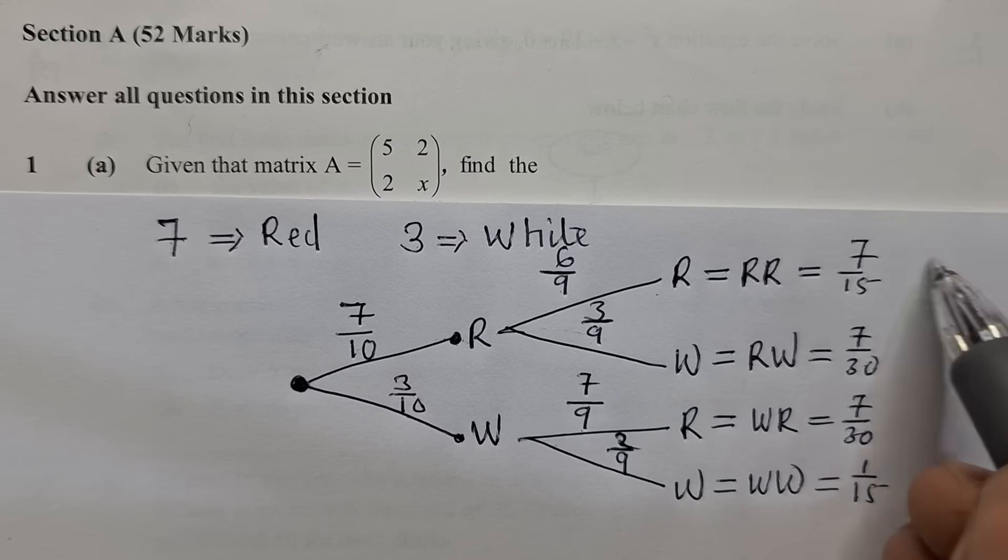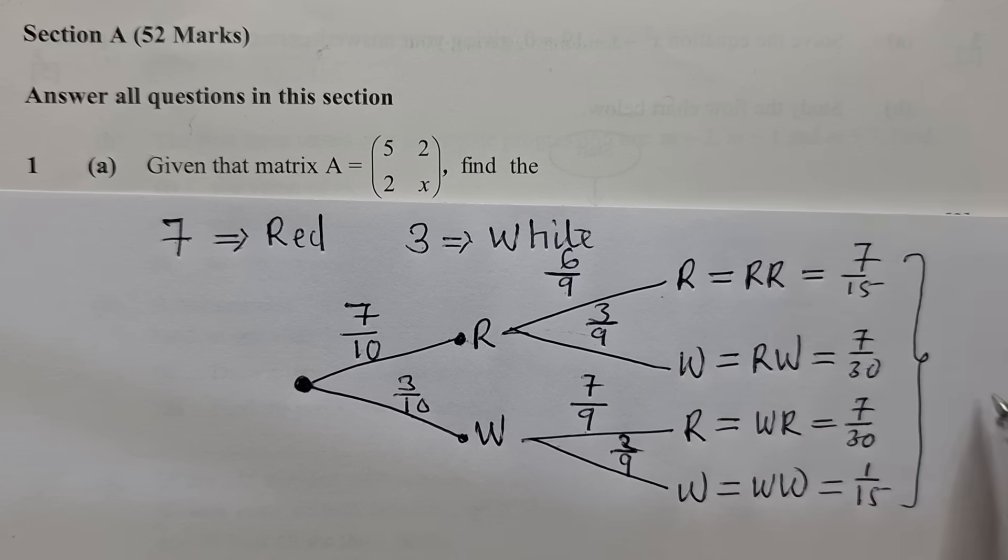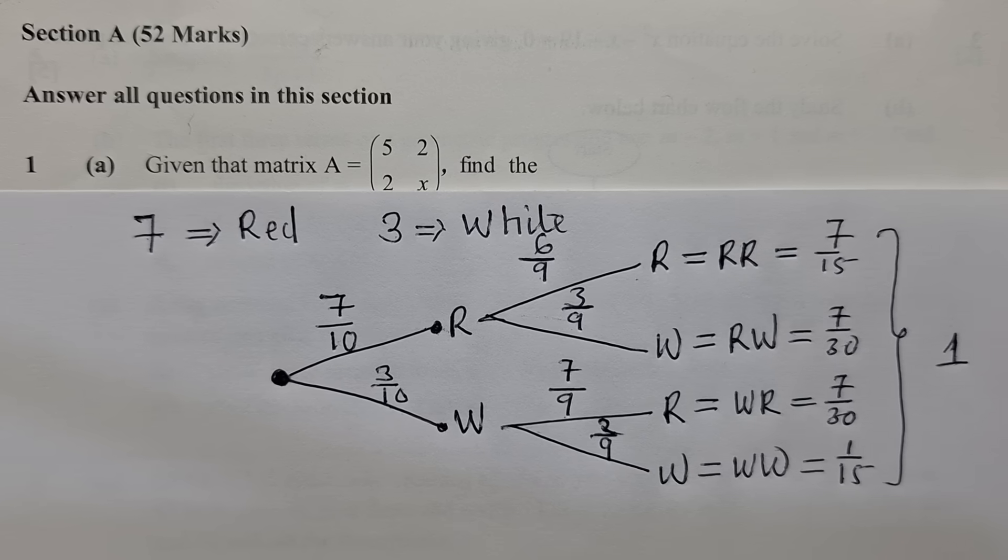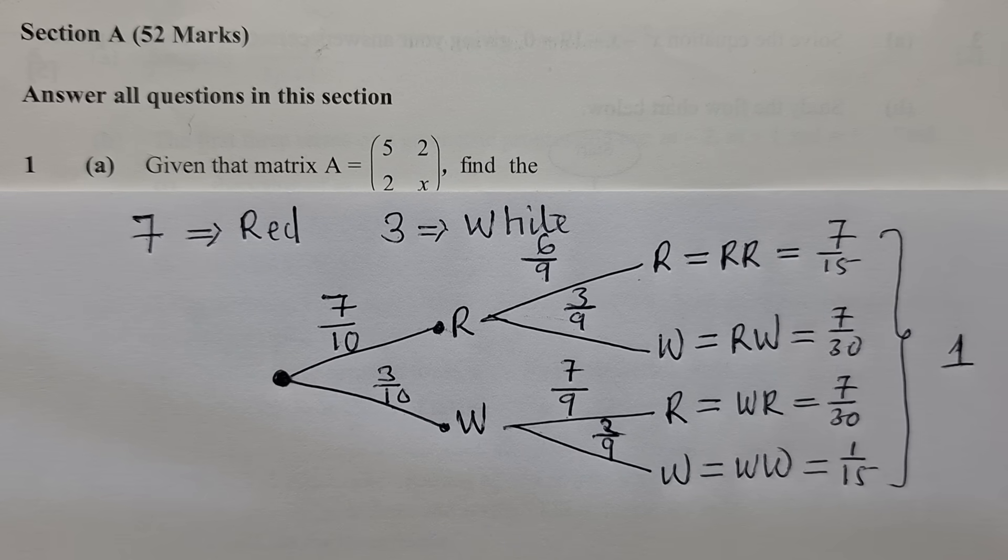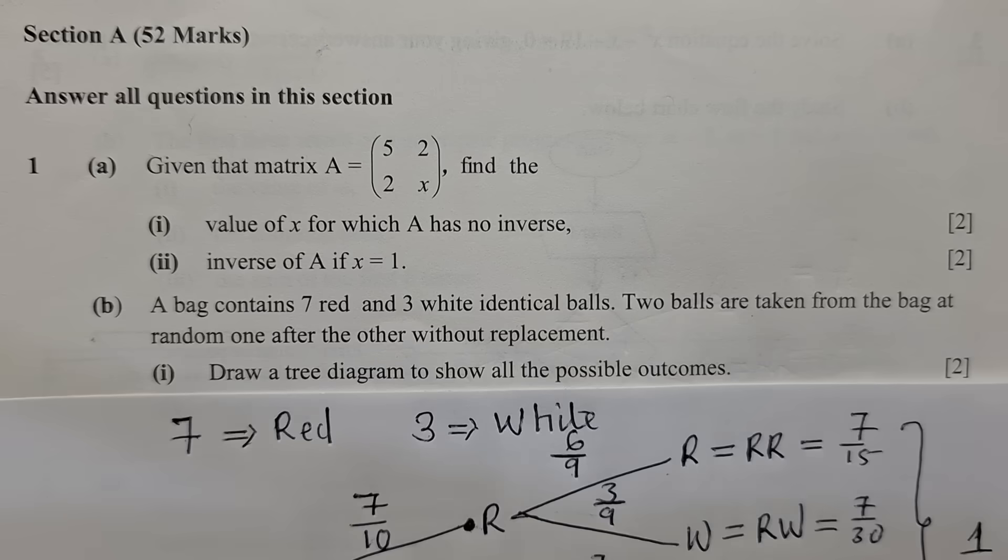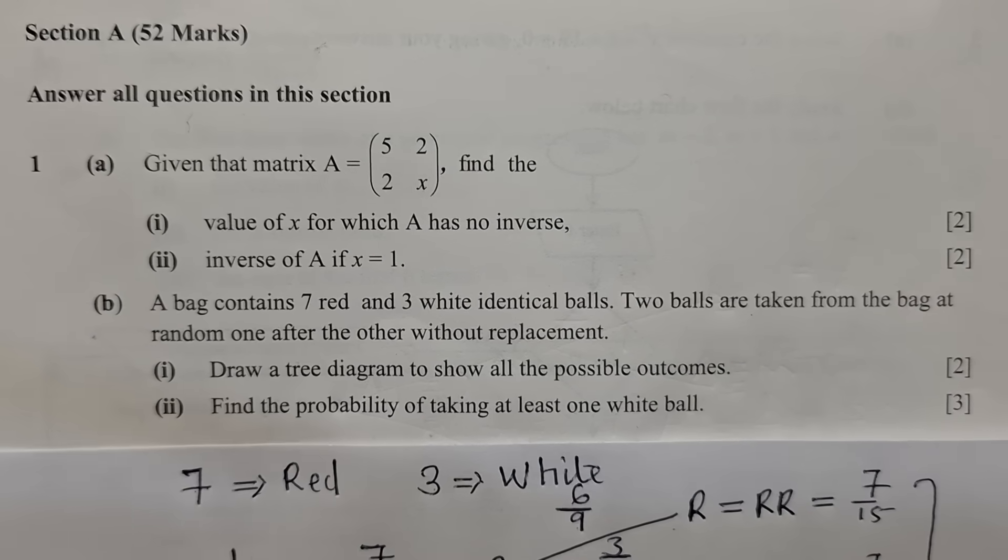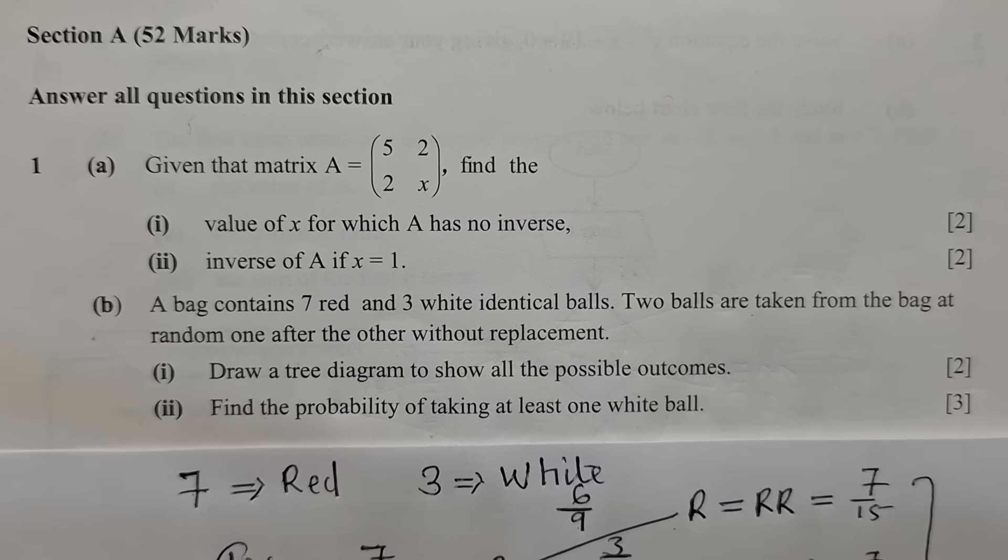Finding these probabilities will help you to understand if you are doing the right thing. So you can now add this plus this plus this plus this. If they are all giving you 1 here, it means you are doing the right thing. This is how we get to test if we are doing the right thing. So now the second question here, we've done the tree diagram. We can say this is B1.